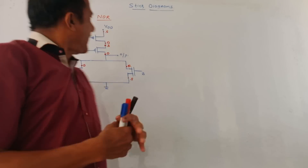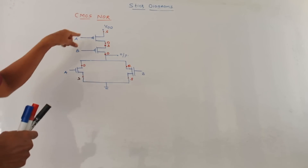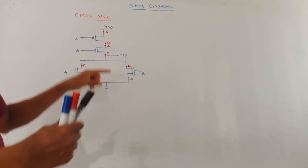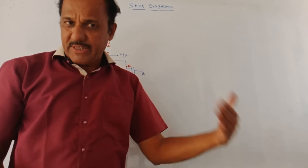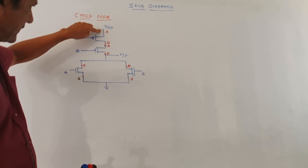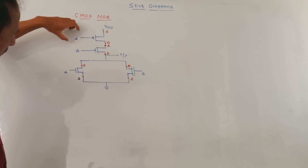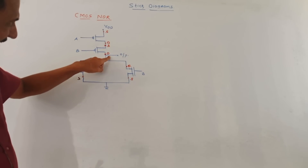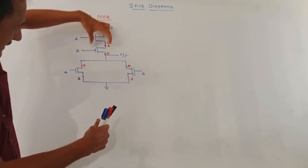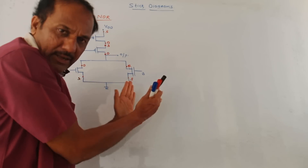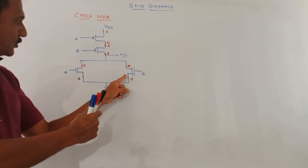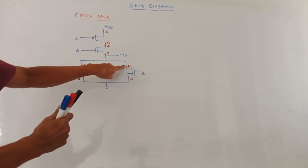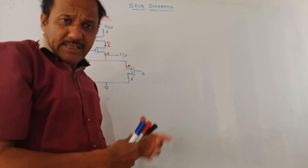The next part is the STICK Diagram for the CMOS NOR gate. This is the corresponding static CMOS logic diagram. I have already marked the source and drain terminals. For P MOSFETs in the PUN, they are in series — for P MOSFET A: upper is source, lower is drain; for P MOSFET B: upper is source, lower is drain. For PDN, N MOSFETs are in parallel, with lower portions as source connected to ground and upper portions as drain.